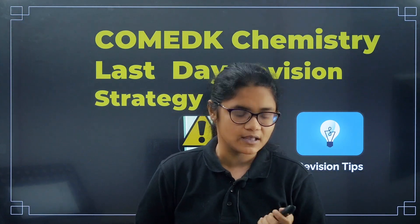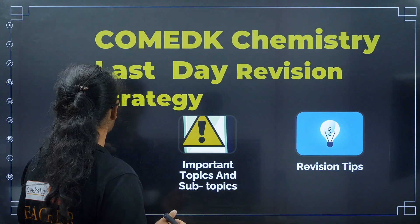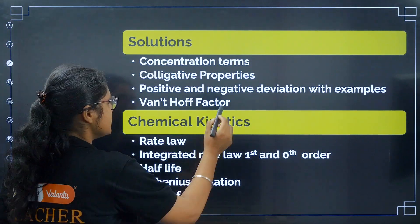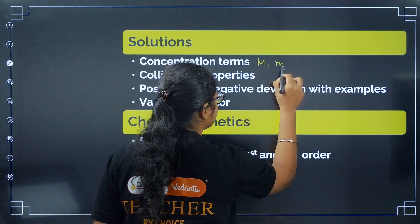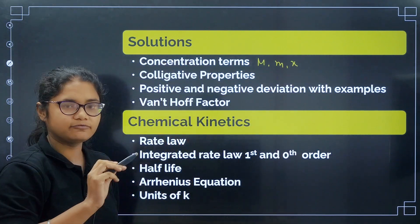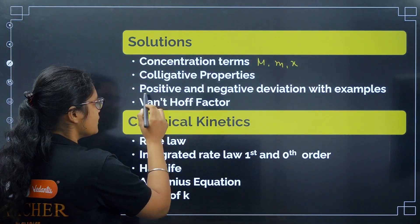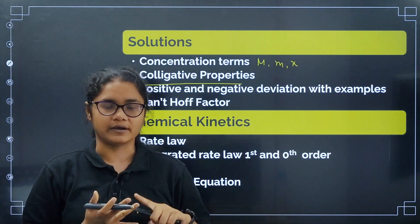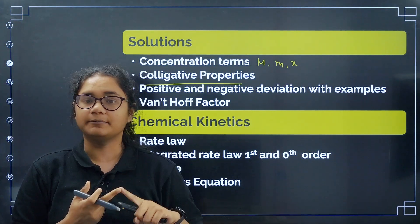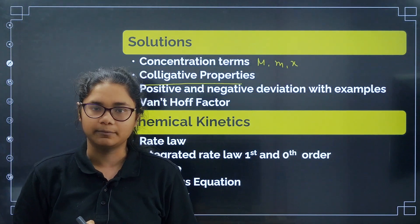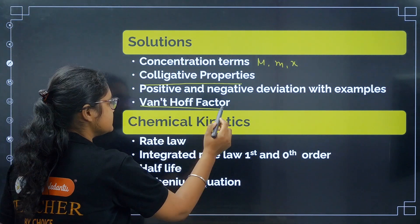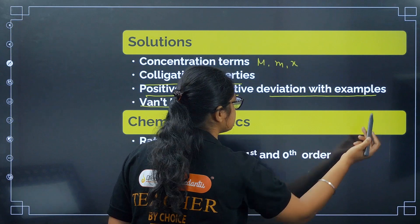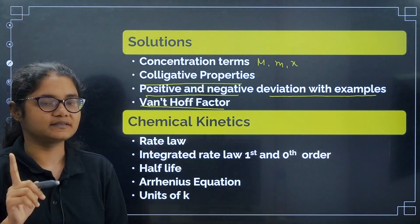In physical chemistry, the first chapter is Solutions. Focus on concentration terms: molarity, molality, and mole fraction — just see their formulas. For colligative properties, cover all four: elevation in boiling point, relative lowering of vapor pressure, depression in freezing point, and osmotic pressure. Next, learn how to calculate the Van't Hoff factor for association and dissociation, positive and negative deviation with examples.